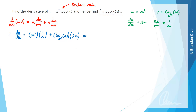Now we just clean this up slightly. x squared times 1 over x is the same as x squared over x, which cancels to just give x. Then we have plus, and the second term is 2x log e of x. So that is the derivative we were asked to calculate to start with.